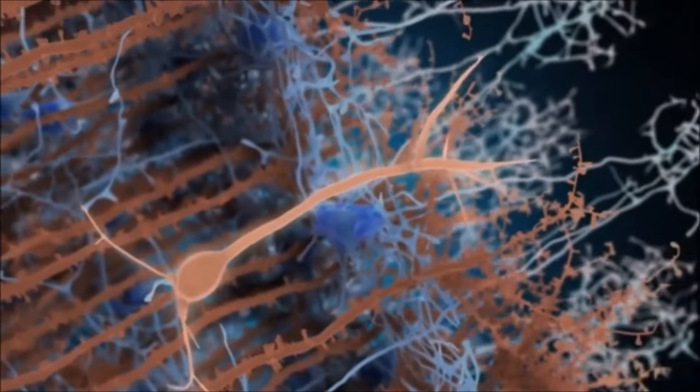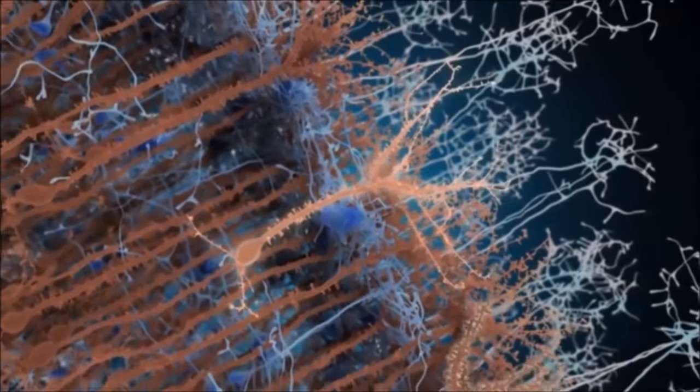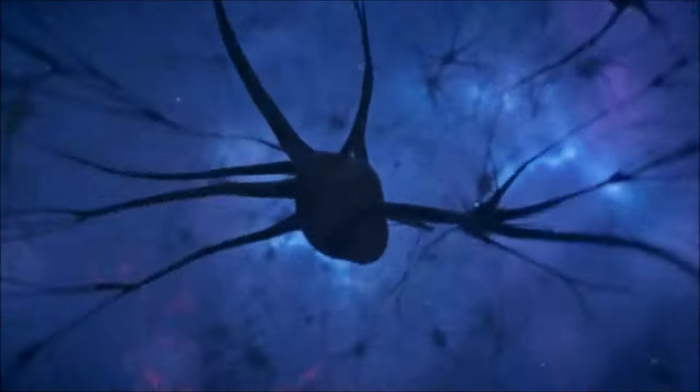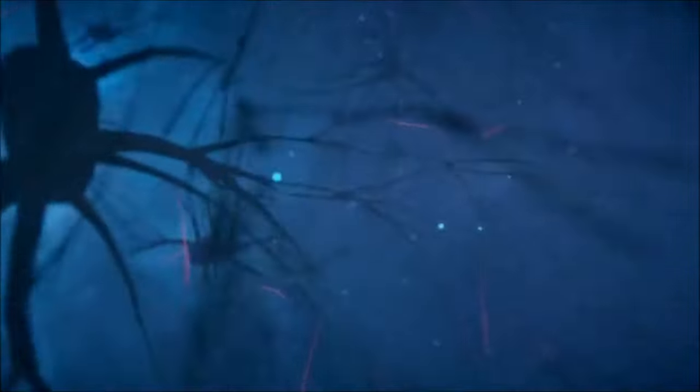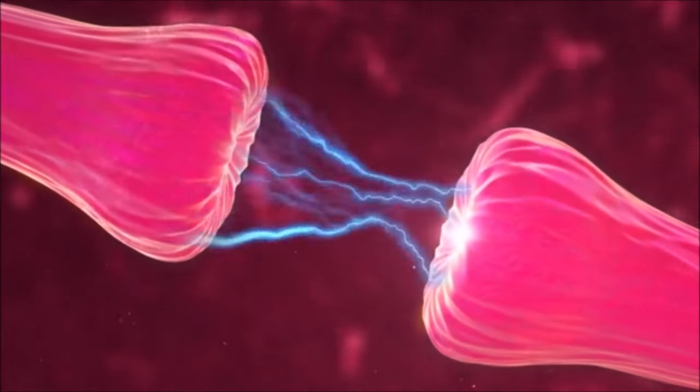Dendrites are short and branched extensions that extend from the cell body of a neuron. Typically, a neuron has many dendrites, and these structures allow the transmission of nerve impulses received from the neuron's surroundings. Various receptors are found on the surface of dendrites, and these receptors capture chemical signals called neurotransmitters.